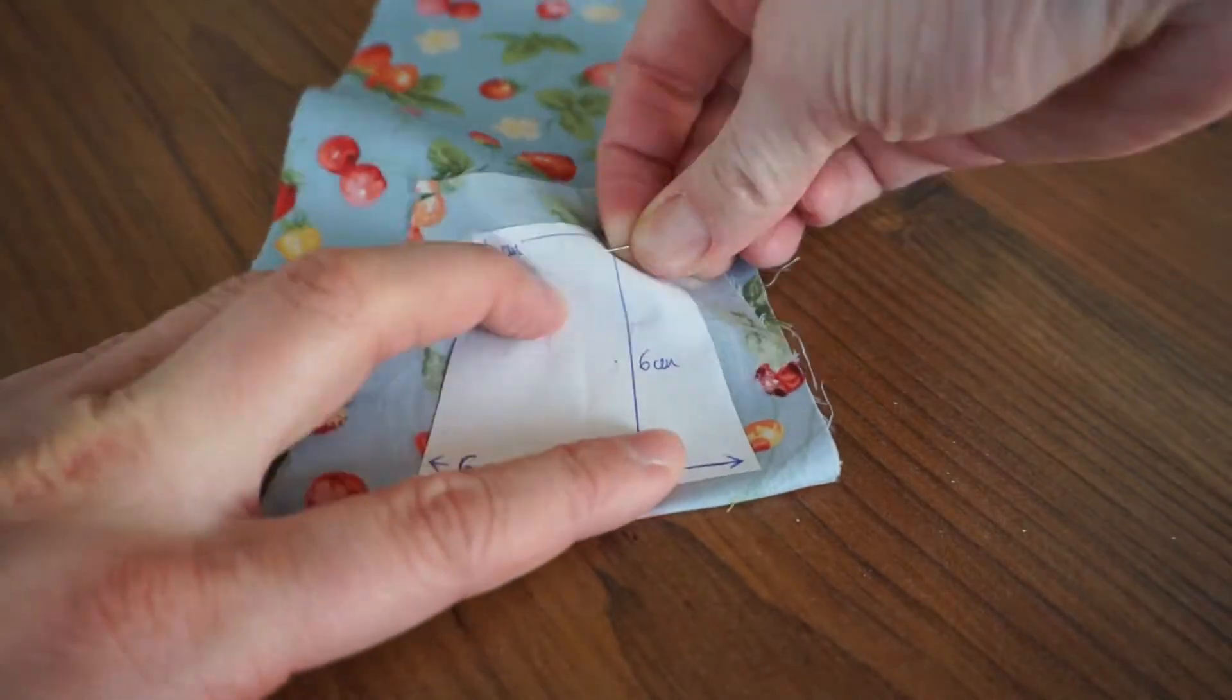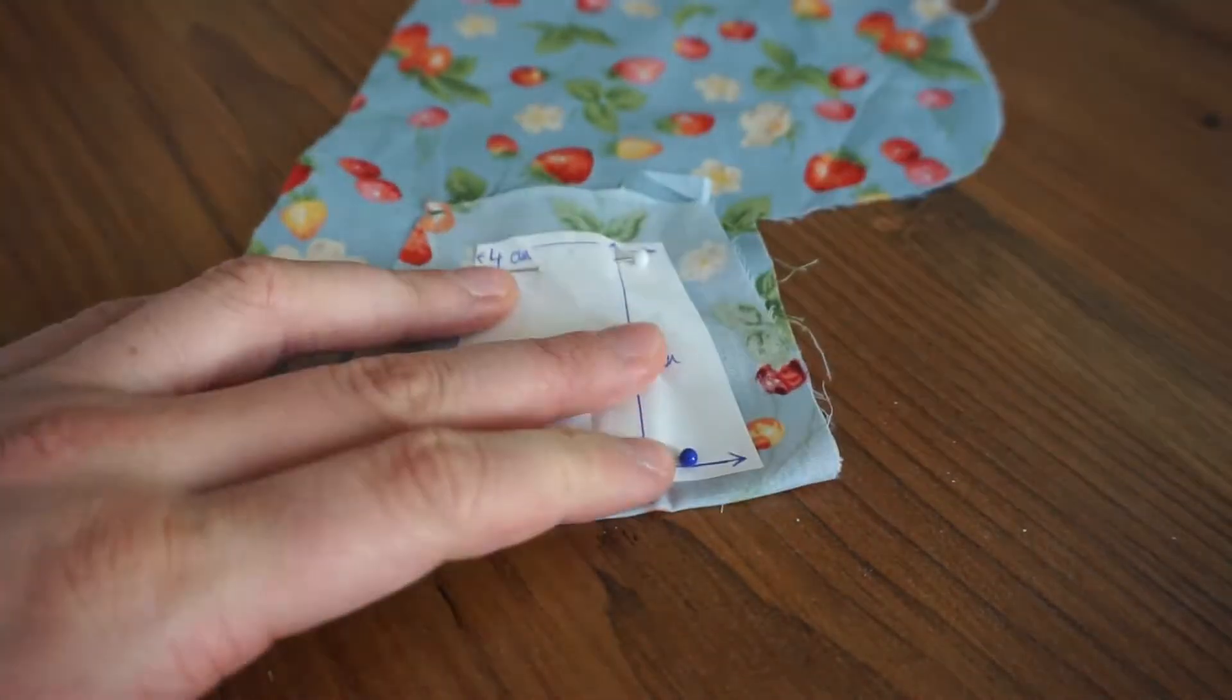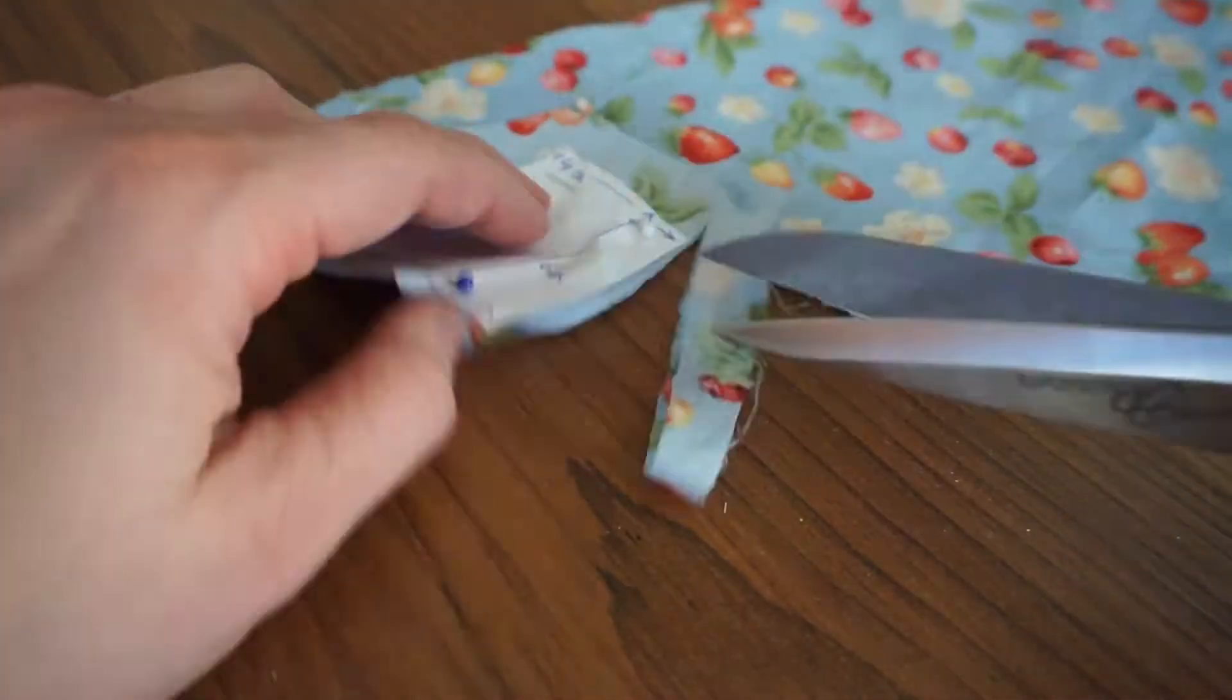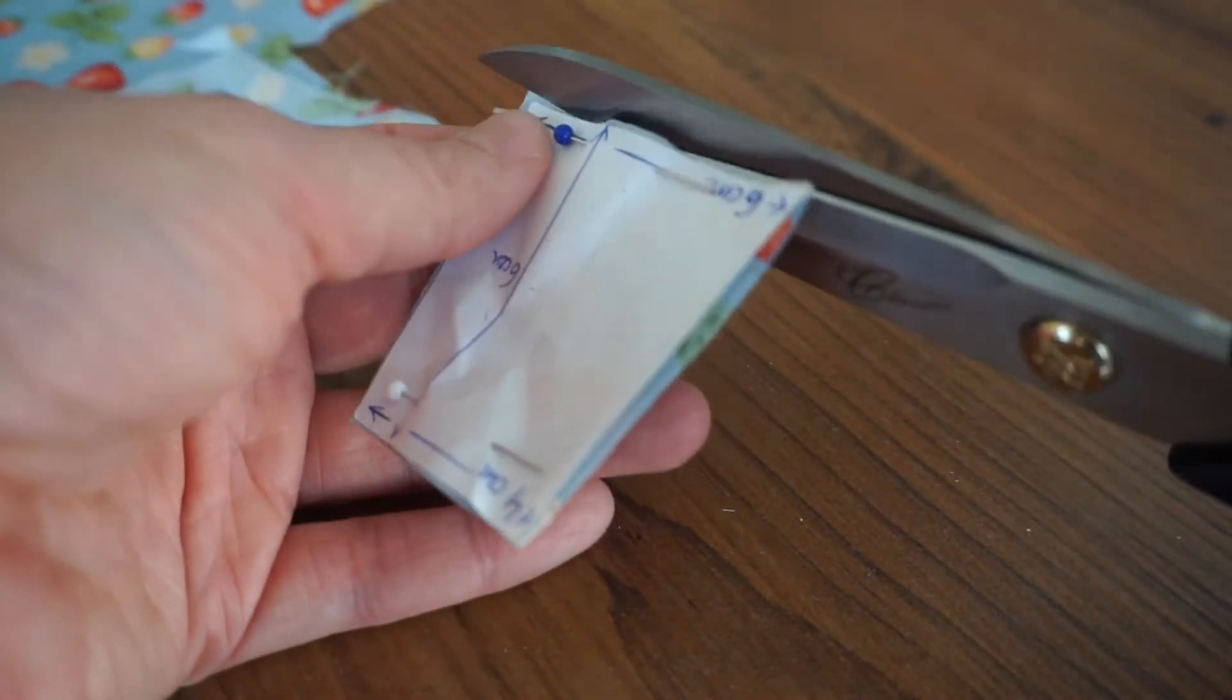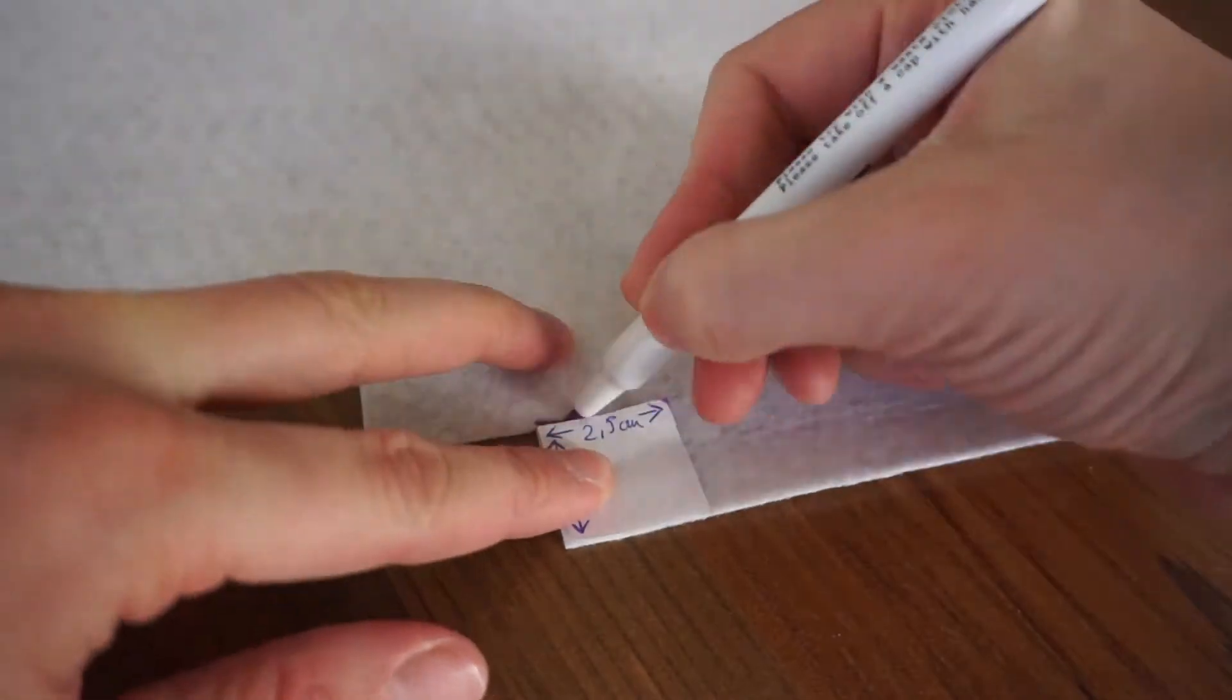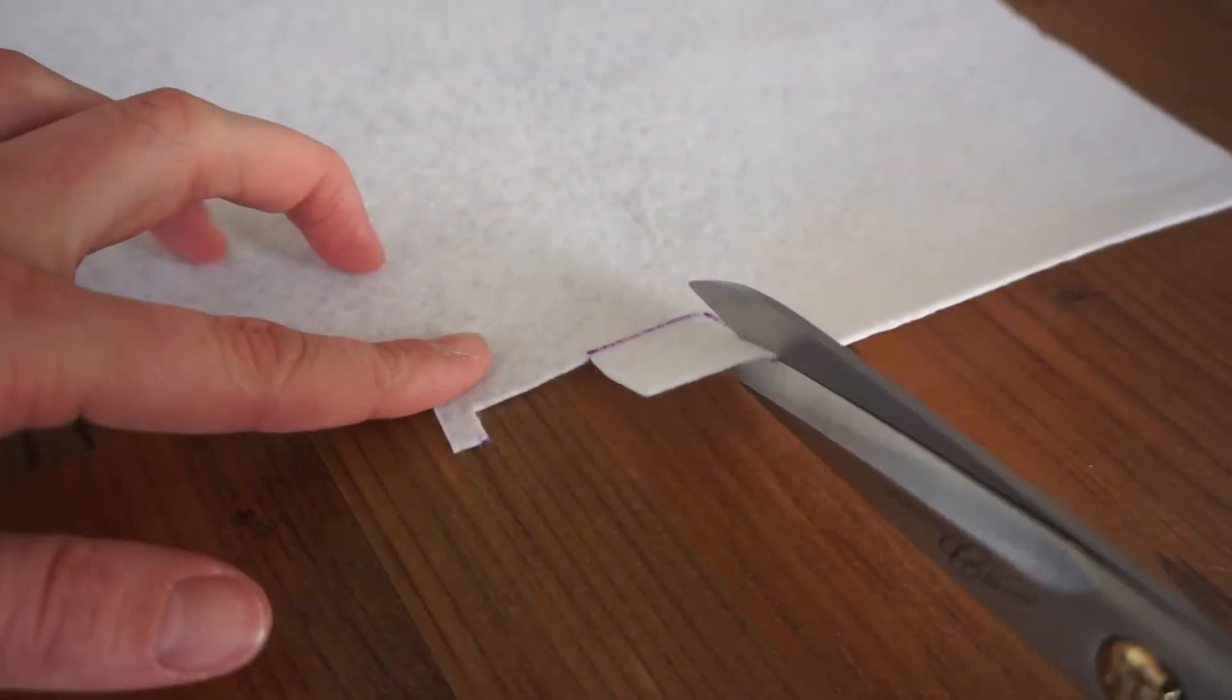Jetzt schneidet ihr das Trapez zweimal aus dem Stoffrest zu. Dann wird aus dem Filz das Quadrat zweimal zugeschnitten.